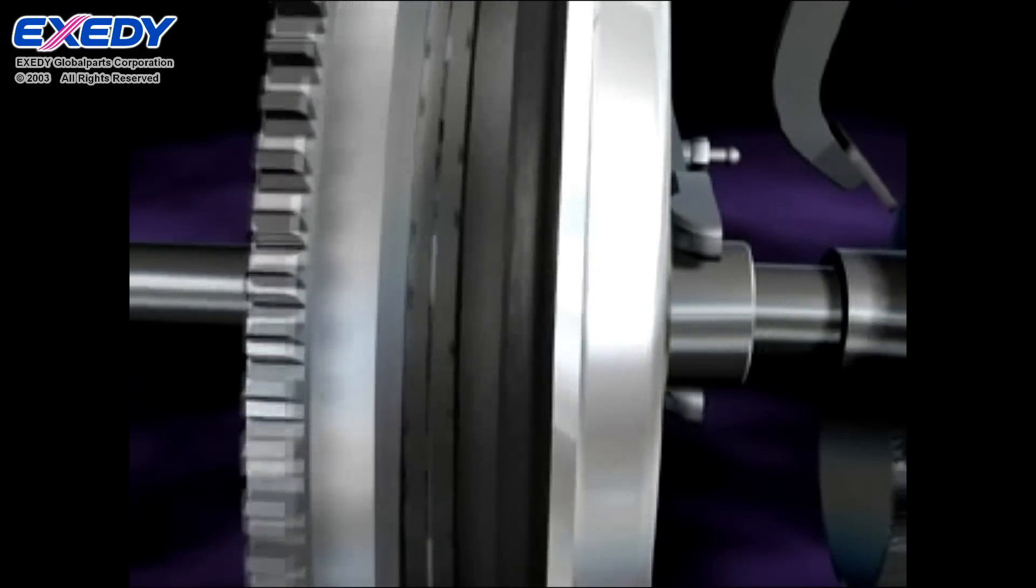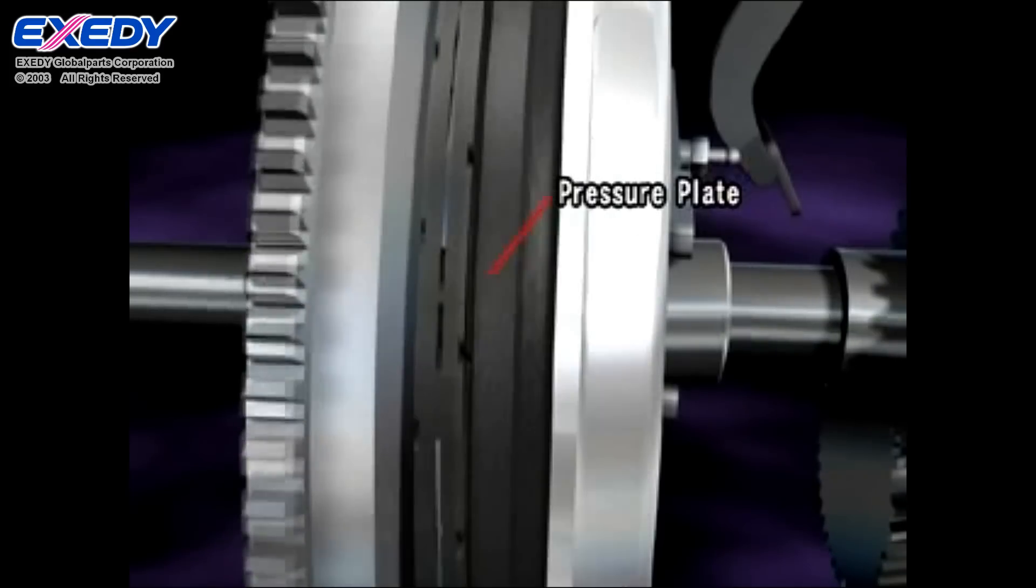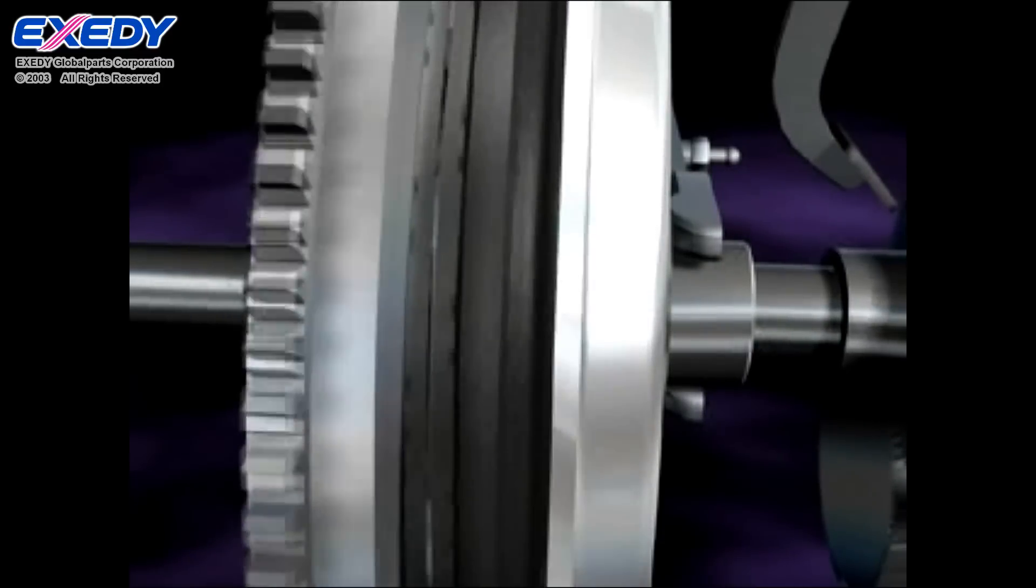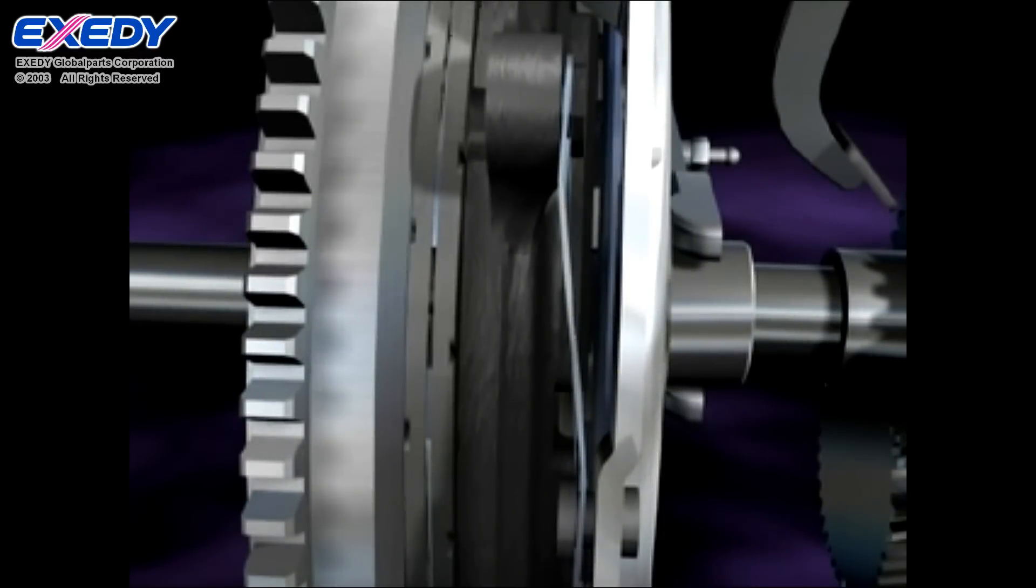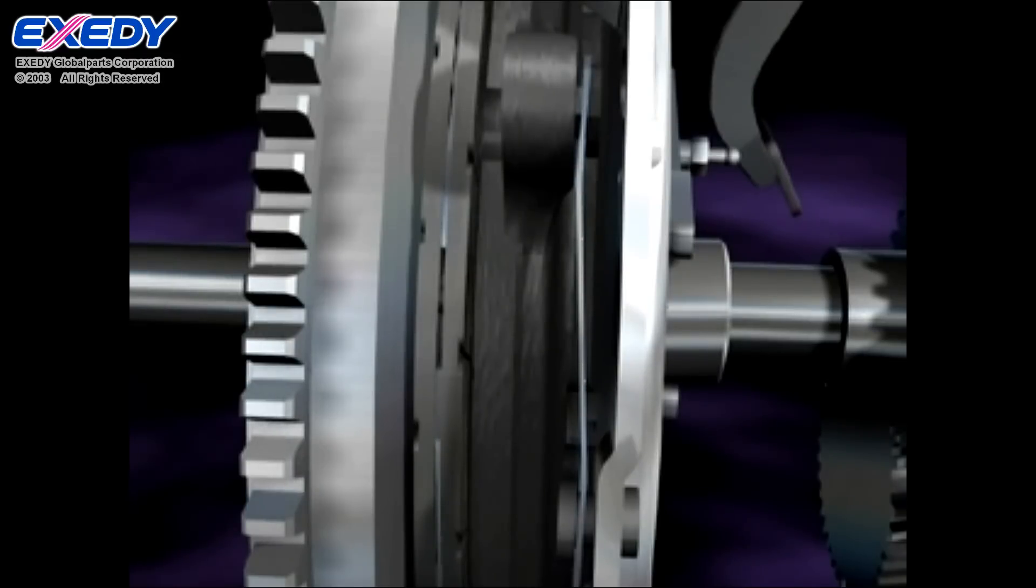When the driver steps on the clutch pedal, it releases the pressure plate that was pressing the clutch disc against the flywheel, disengaging the clutch disc. In this state, engine torque is not transmitted to the transmission.